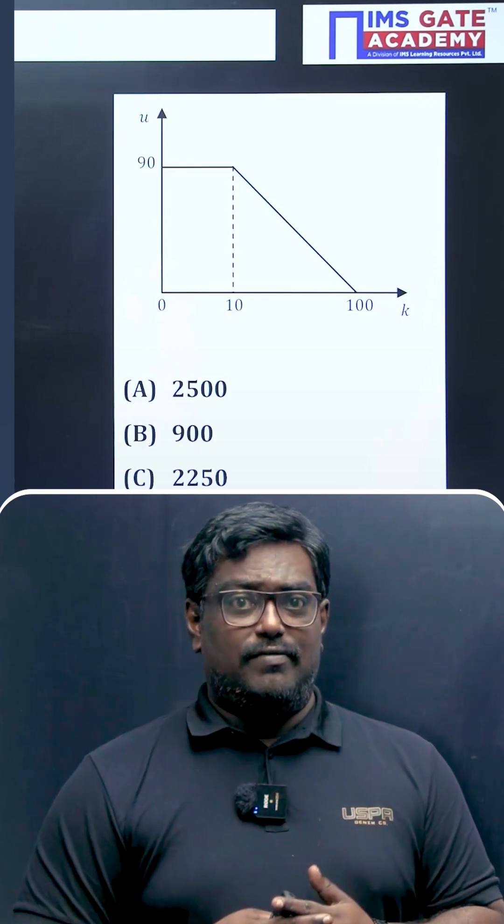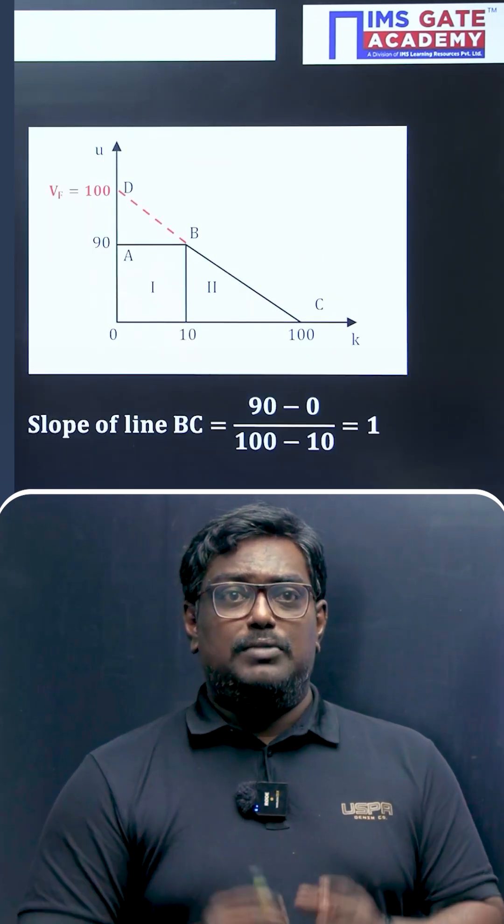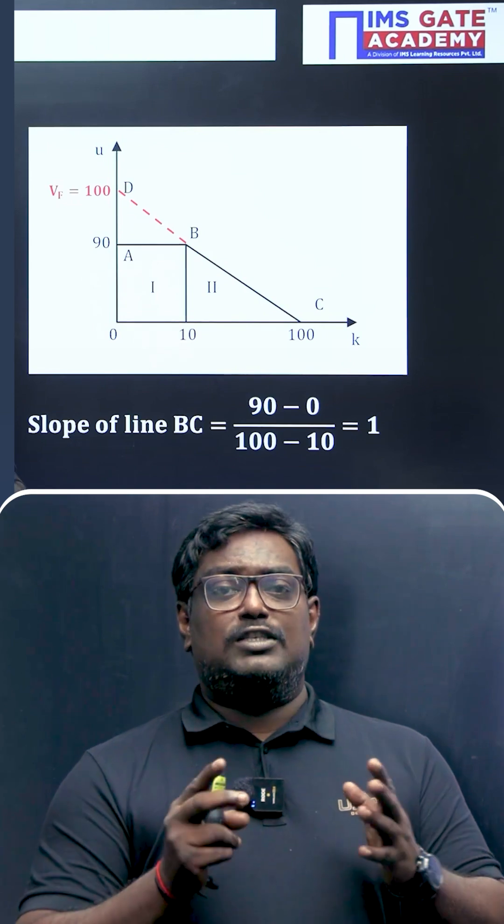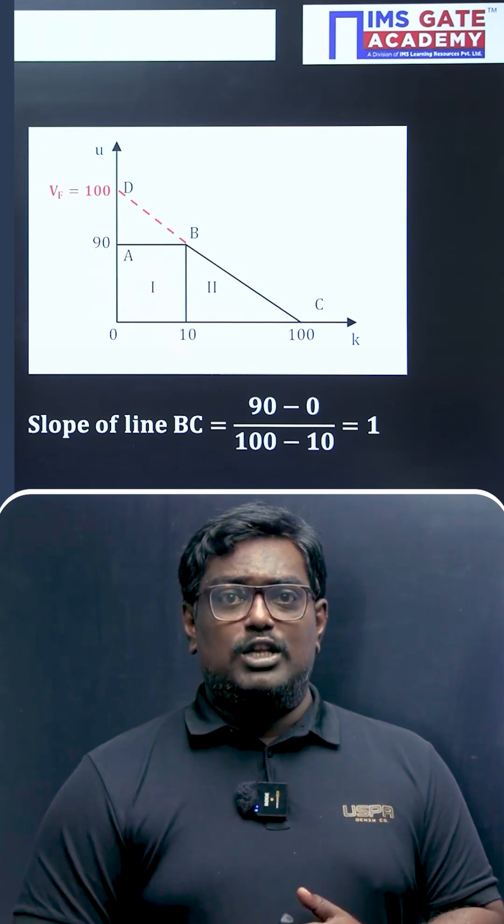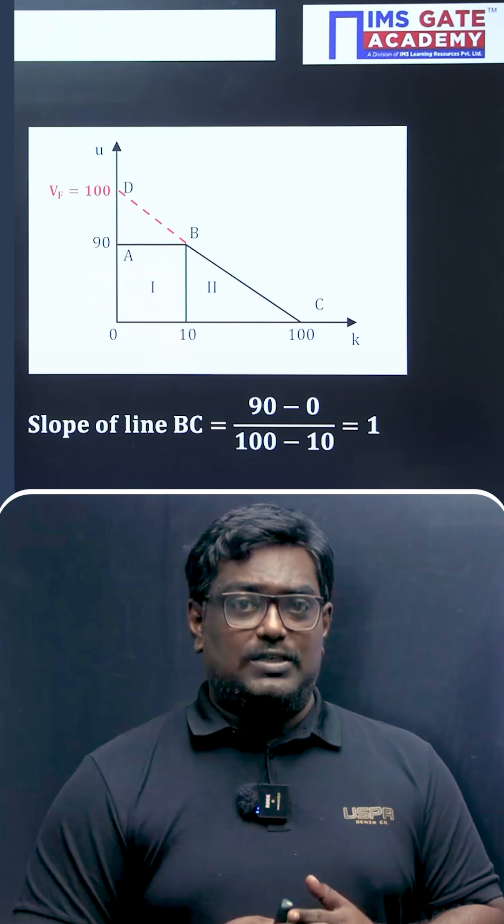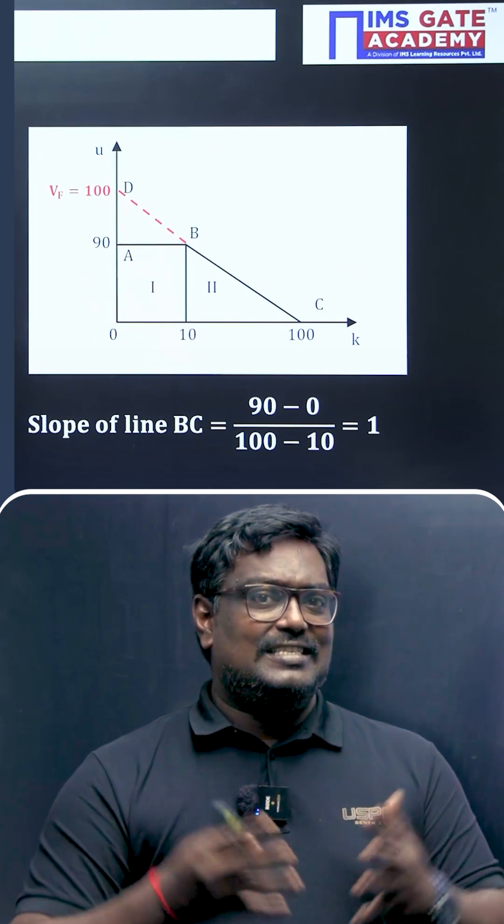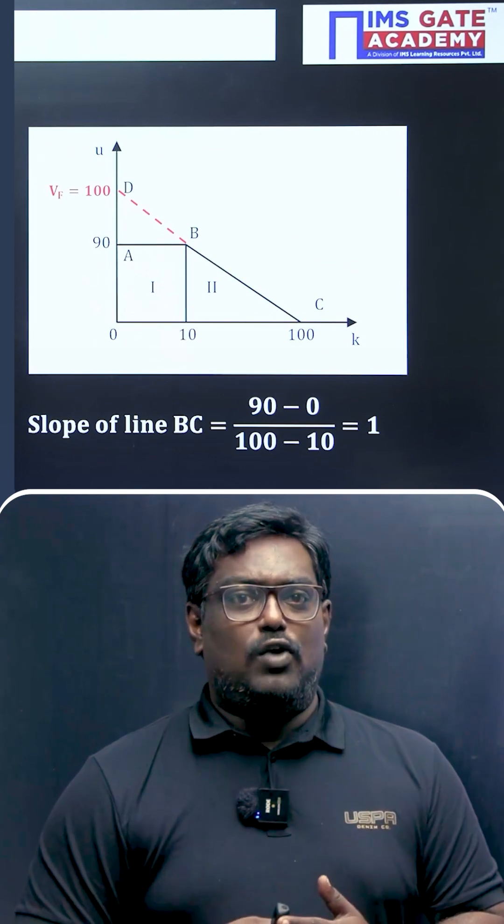The y-axis represents the velocity. When I solve this problem, there is a very important thing here: first, try to find out the slope of the line. Once I found the slope of the line, you will get slope as one. What is slope? Tan theta is nothing but one, and theta equals 45 degrees.